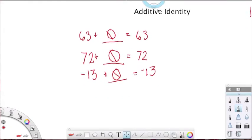The additive identity says anytime you add 0 to a number, it remains the same. Okay, so when you add 0 to a number, that's the additive identity. The value does not change.